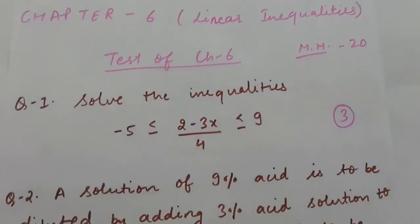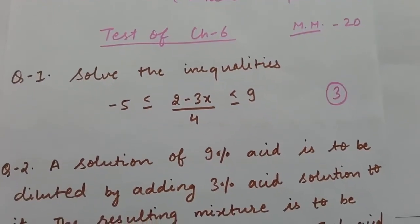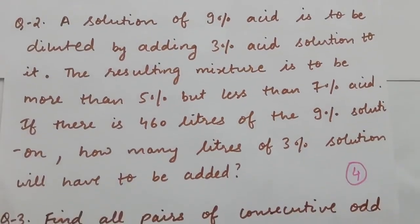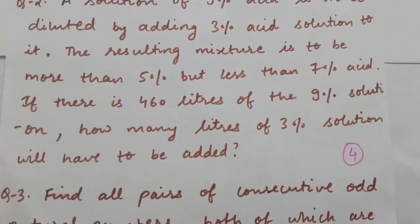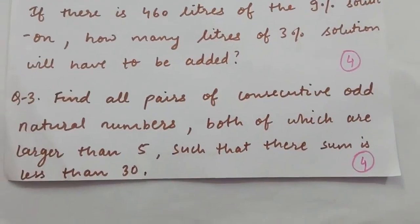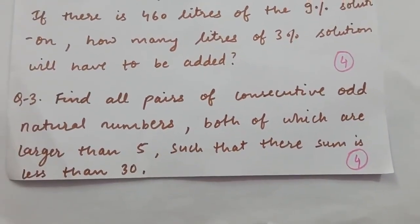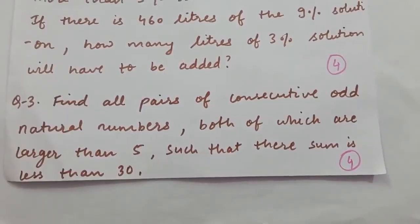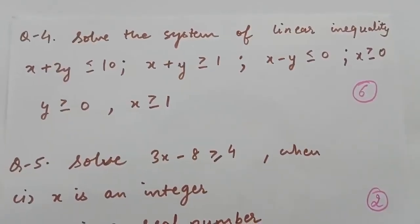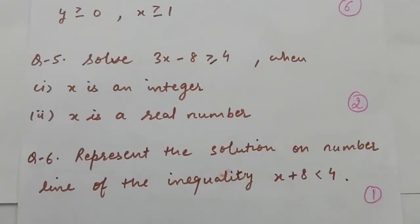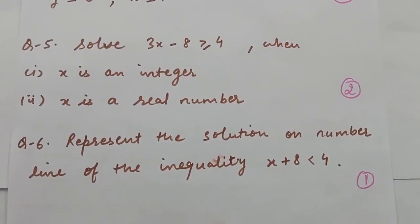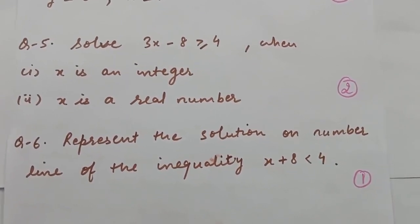Question number one is of three marks. Question number two is of four marks. Question number three is of four marks. Question number four is of six marks. Question number five is of two marks and question number six is of one mark.